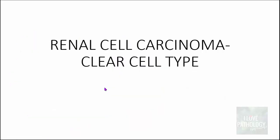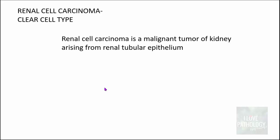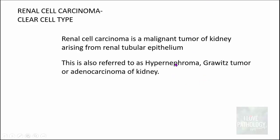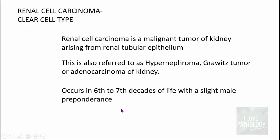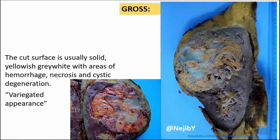The second important lesion is renal cell carcinoma of the clear cell type. Renal cell carcinoma is a malignant tumor of the kidney arising from renal tubular epithelium. It is also referred to as hypernephroma, Grawitz tumor, or adenocarcinoma of the kidney, and often occurs in the sixth to seventh decades of life with a slight male preponderance. Grossly, the cut surface is solid, yellowish-gray-white with areas of hemorrhage, necrosis, and cystic degeneration — giving what we call a variegated appearance.